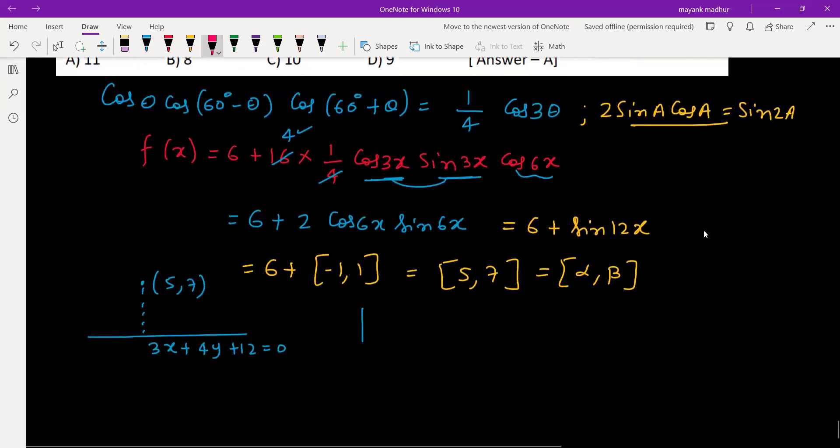So 3 into 5 plus 4 into 7 plus 12, divided by root of x coefficient square plus y coefficient square. So it will turn out to be 15 plus 28 plus 12.